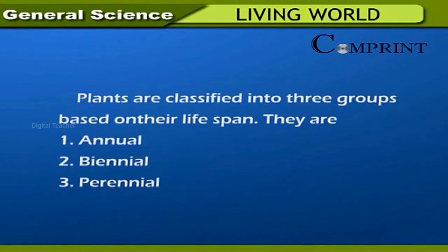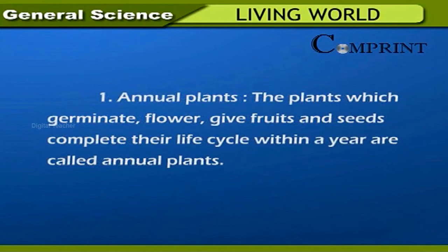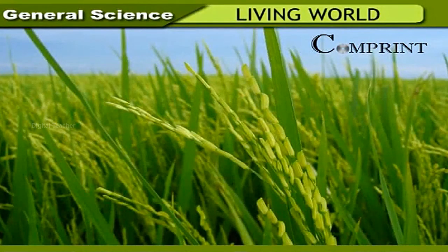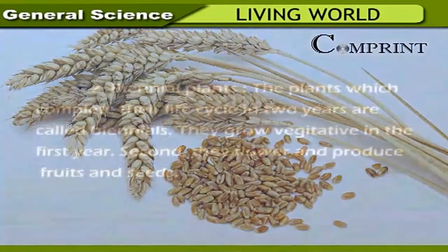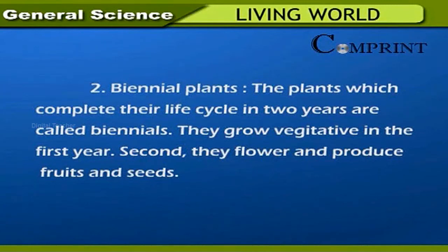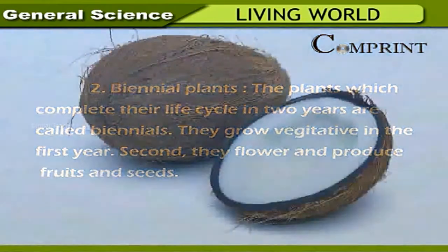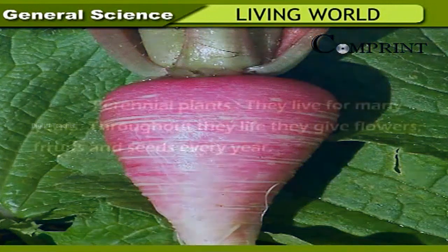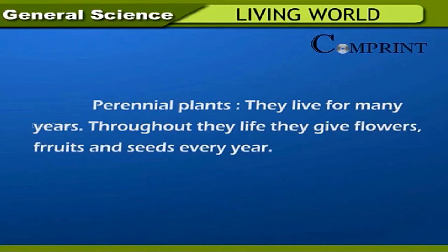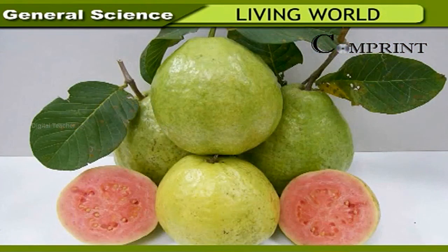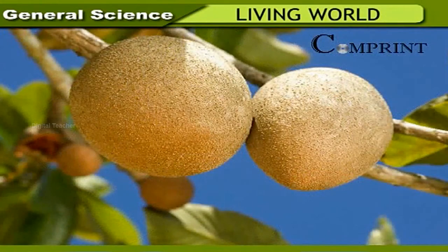Plants are also classified into three groups based on their lifespan: annual, biennial, and perennial. Annual plants germinate, flower, give fruits and seeds, and complete their life cycle within a year — examples include paddy, wheat, beans, and pumpkin. Biennial plants complete their life cycle in two years: they grow vegetatively in the first year and flower, producing fruits and seeds in the second year — examples include carrot, beetroot, and radish. Perennial plants live for many years, giving flowers, fruits, and seeds every year — examples include mango, neem, tamarind, sapota, and coconut.